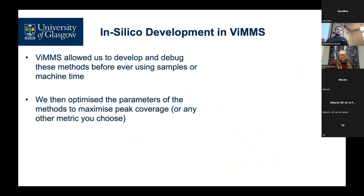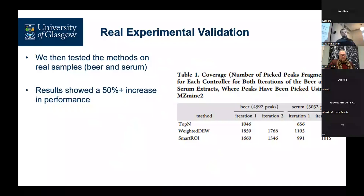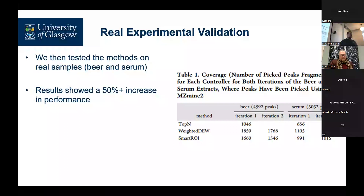We developed these methods fully in VIMS, which was very useful because we encountered hundreds of bugs and were able to get rid of them all before trying them on the machine. We also optimized parameters as we did with Top-N. Validation in simulations showed that these methods perform better the more chemicals you have in a dataset — which is intuitive: a low number of chemicals is an easy challenge, a high number is harder. In a real sample we saw about a 50% improvement in the number of peaks we were able to fragment, meaning instead of being able to look up 100 metabolites in your database you'd basically have 50 to 70 extra — so you should end up with a lot more identifications.